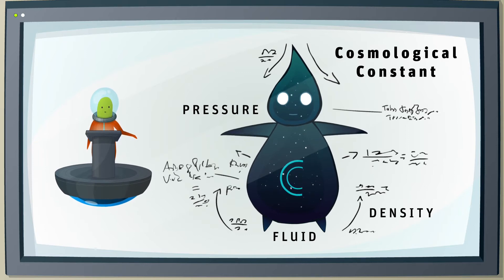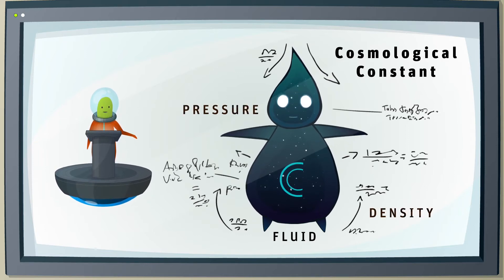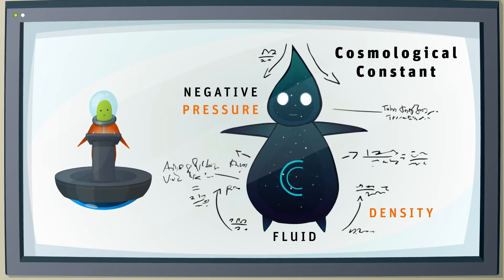But differently from a gas. For the cosmological constant, the pressure is as large as its density. And it is negative.